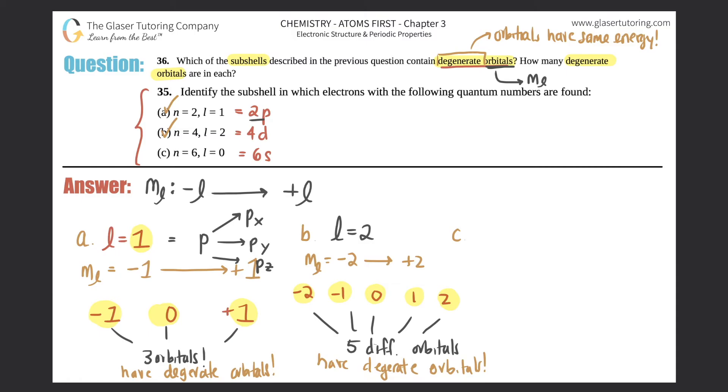For c, l equals 0. Let's see. ML equals technically negative l to positive l. So this one would be negative 0 all the way to positive 0 technically. But does that make any sense? No. This would just be 0. So how many different orbitals? Only one orbital here. So can this be degenerate? Can the orbitals have the same energy? No. So in this case, there are no degenerate orbitals.